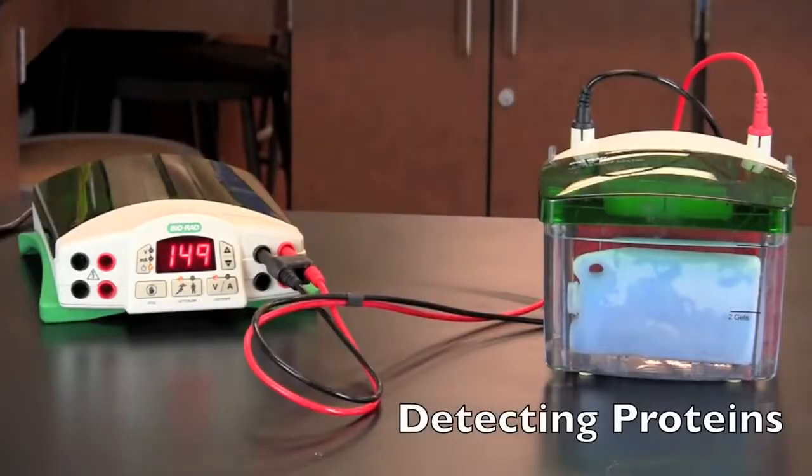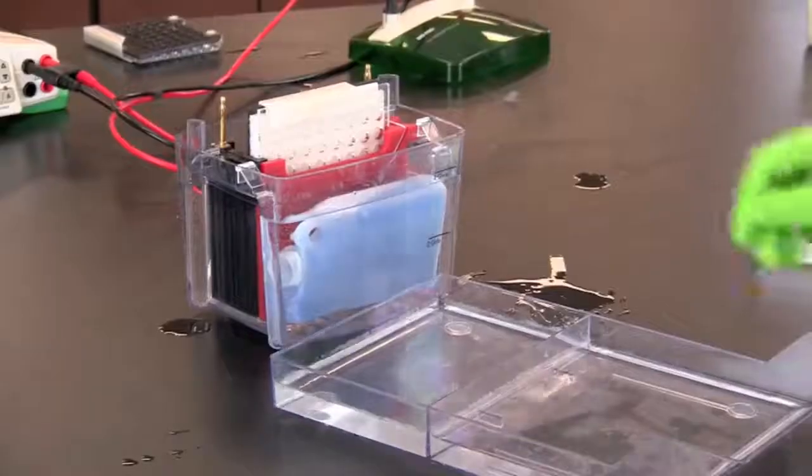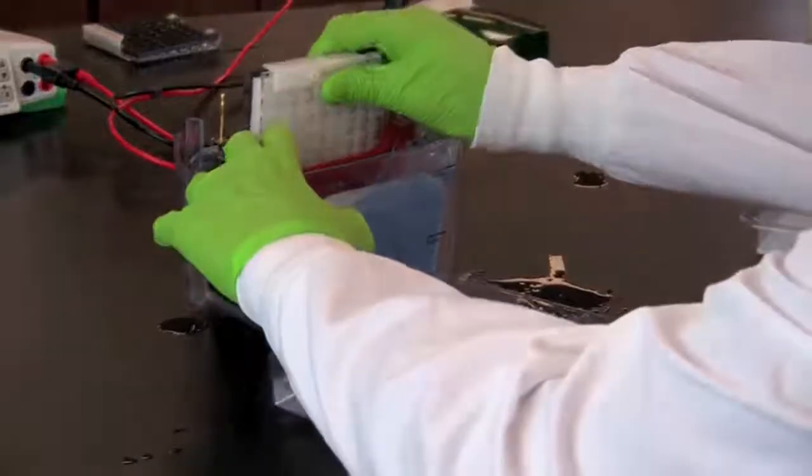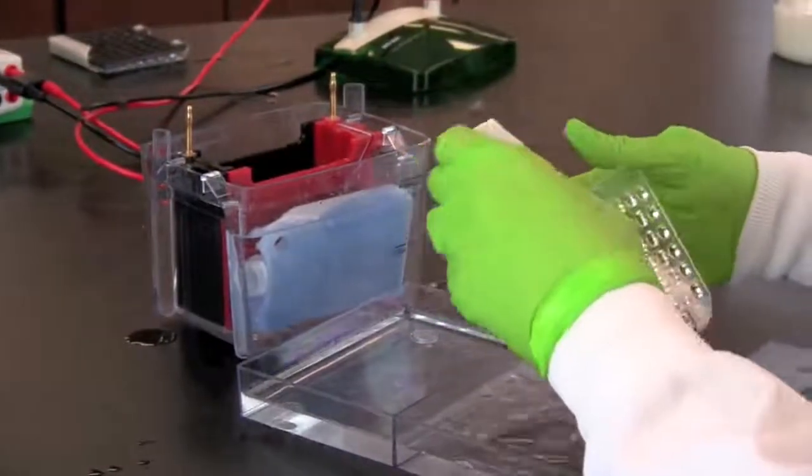When the run is complete, turn off the power supply and disassemble the electrophoresis chamber and remove the inner module. Open the module and place it in a container filled with blotting buffer with the black side down.